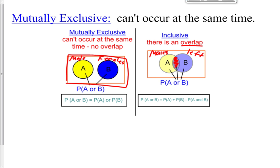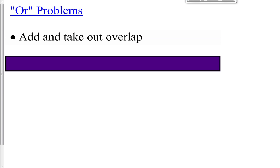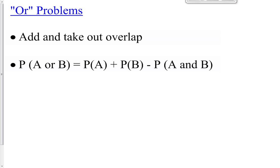That's going to affect our OR probabilities. Here's the equation you're going to write down: for OR problems, you're going to add the probabilities and take out the overlap. To find the probability of A or B, you take the probability of A, add it to the probability of B, and then subtract the probability of A and B to avoid counting the overlap twice. Please write down this equation — you'll be using it several times today.